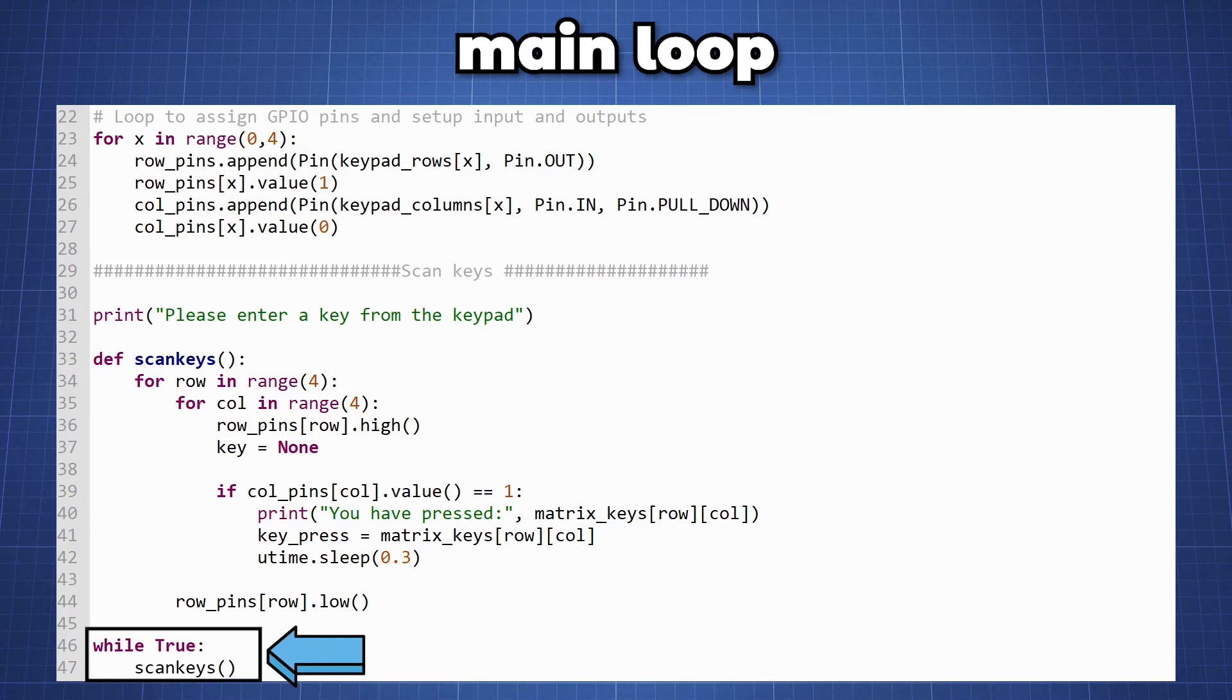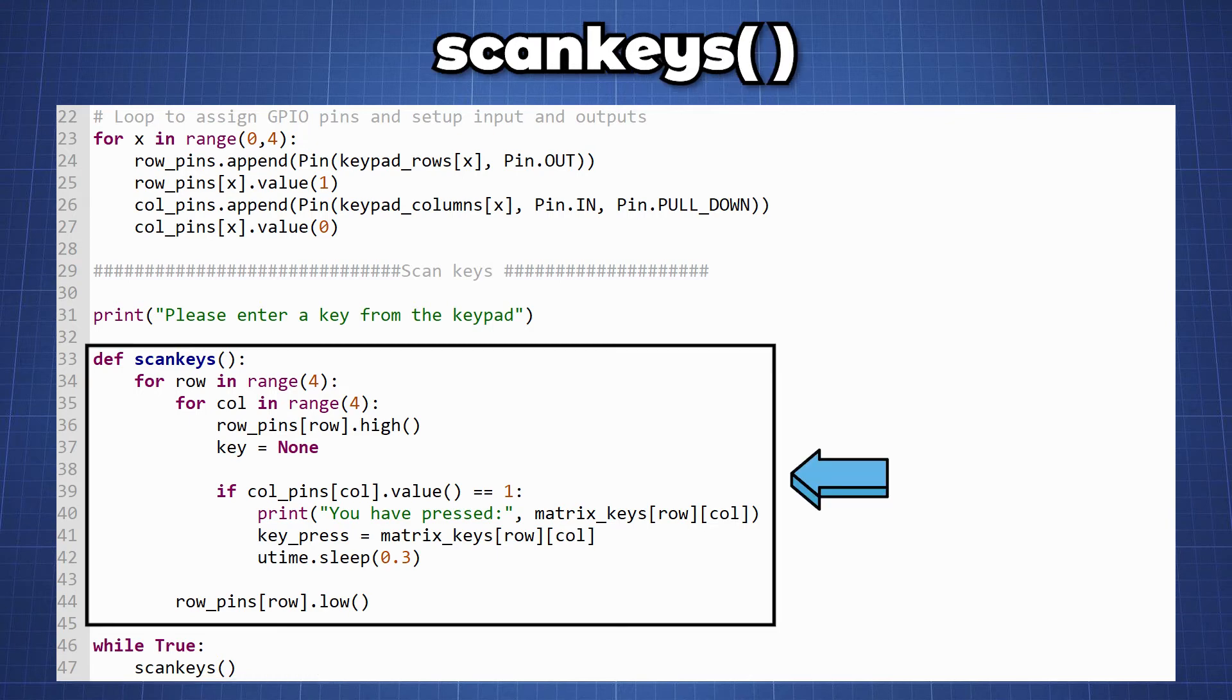In this endless loop we need to scan all the keys and to check for a button press. So we create a function scan keys. In this function scan keys we create two for loops to check each row with all the columns for each key press. If a key has been pressed the corresponding column value will change to a 1. And we will print out what key you have pressed by looking at our matrix keys, checking the row and column and a short sleep function to ensure that the value is only read once. Then we set the row pins to low again and we continue to check for any new key presses.